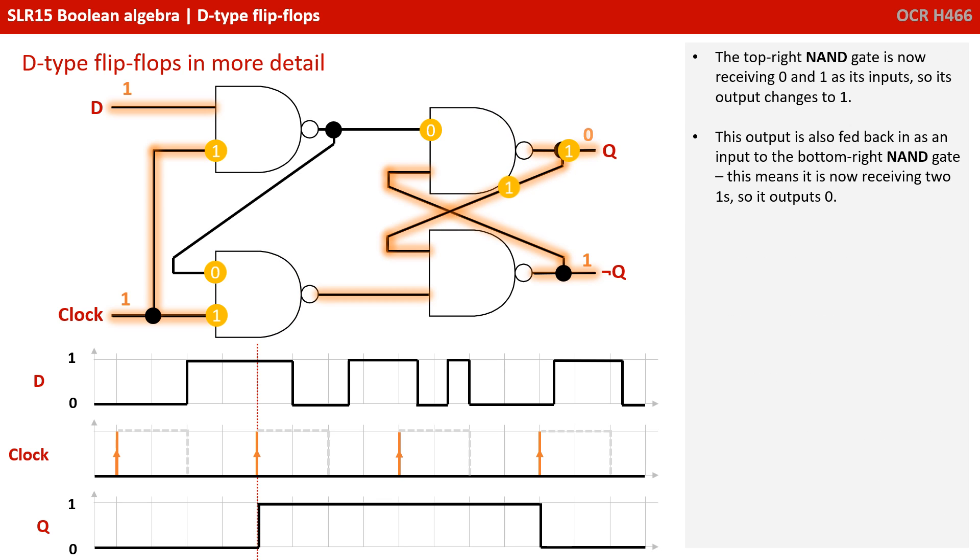The top right NAND gate is now receiving nought and one as its input, so our output changes to one. This output is also fed back in as an input to the bottom right NAND gate. This means it's now receiving two ones, and so output zero.